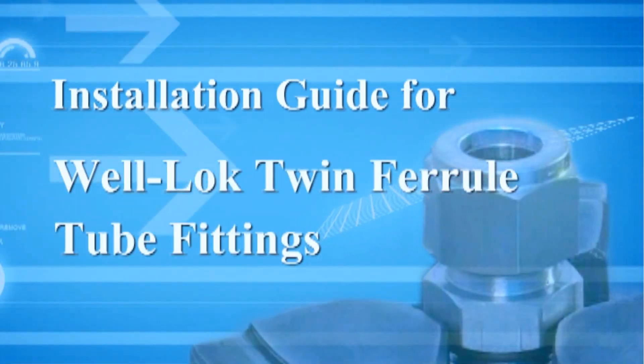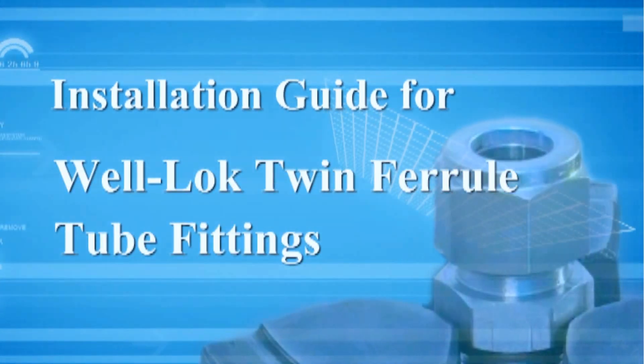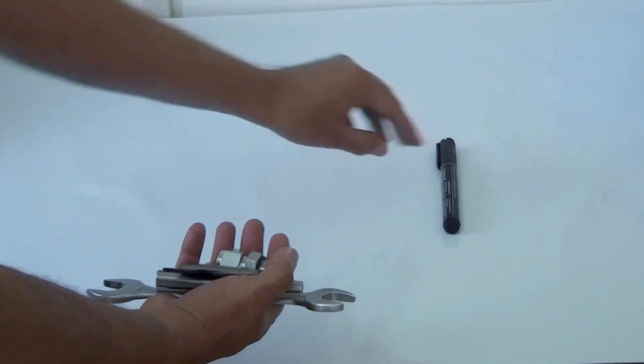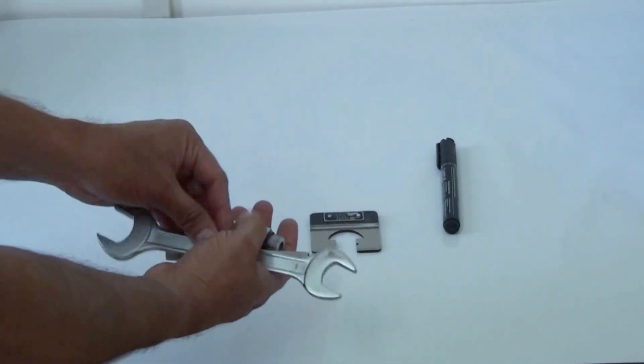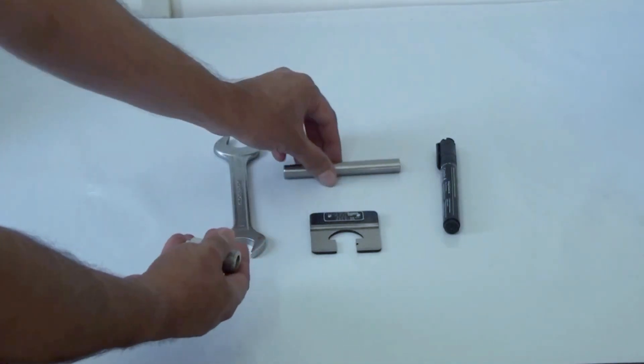Installation Guide for Well-Lock Twin Ferrule Tube Fittings. You will need a marker, a Well-Lock Inspection Gauge and a standard wrench to complete the installation properly.